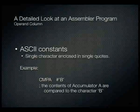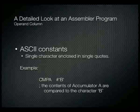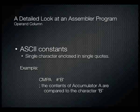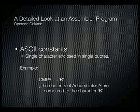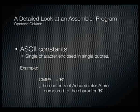ASCII constants are defined by placing the character between single quotes. This is useful when interpreting keyboard input — for example, 'CMPA #''B''' compares accumulator A with the ASCII character B. It's much simpler than looking up the ASCII table to find the numeric value for that character.